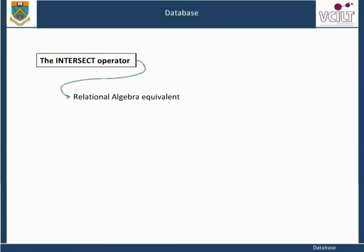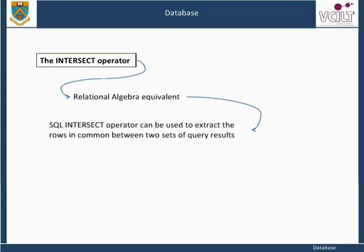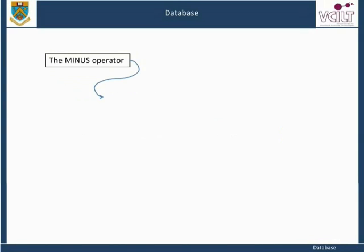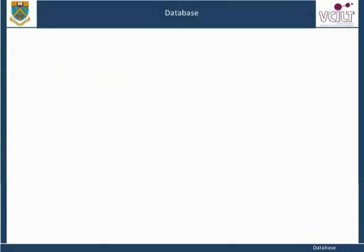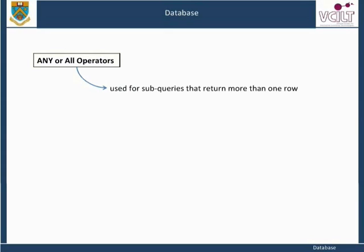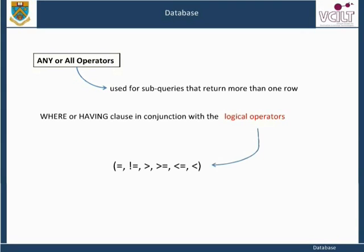Like its relational algebra equivalent, the SQL INTERSECT operator can be used to extract the rows in common between two sets of query results. MINUS is used, like the difference operator of relational algebra, to subtract one set of results from another where those results are derived from different tables. The ANY or ALL operators may be used for sub-queries that return more than one row. They are used on the WHERE or HAVING clause in conjunction with the logical operators. ANY compares a value to each value returned by a sub-query.